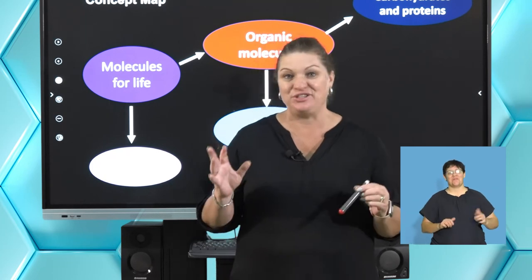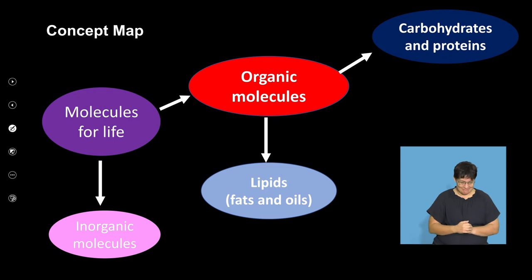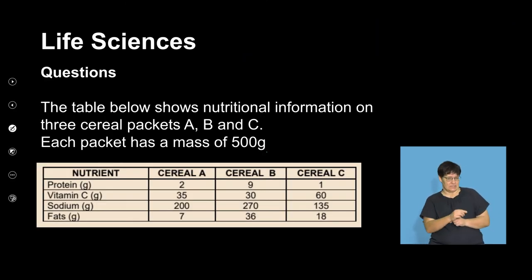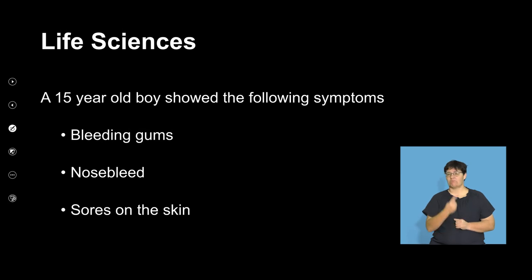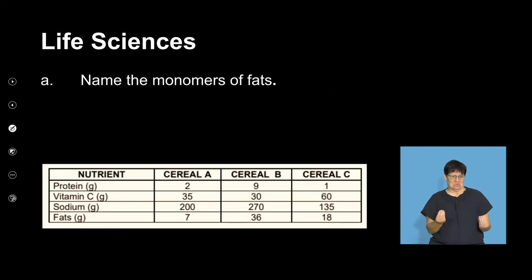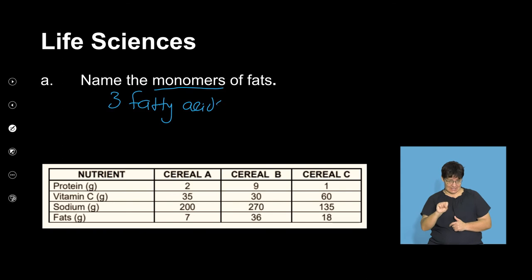Welcome back, life sciences. We're looking at lipids — let's start with some questions on this section. We've got a table with three different cereals: cereal A, B, and C, with a whole lot of information. Each pack is 500 grams. There's a 15-year-old boy, and the first question: what are the monomers or building blocks of fat? Remember — three little pigs and the big bad wolf. The answer is three fatty acids and one glycerol.